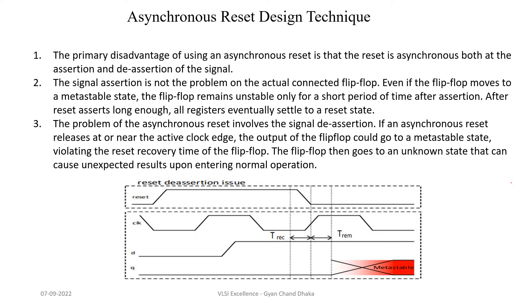If the deassertion happens near the active clock edge — what we call the recovery and removal window — the flip-flop might go into meta-stable state. As you can see in this waveform, this is an active reset signal and the reset deassertion happens near the rising edge of the clock. As per the flip-flop architecture specification, the reset signal should be stable before T_recovery time of the rising edge of the clock, and similarly it should be stable for T_removal time after the rising edge of the clock.